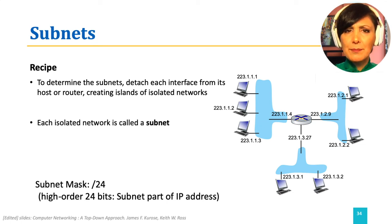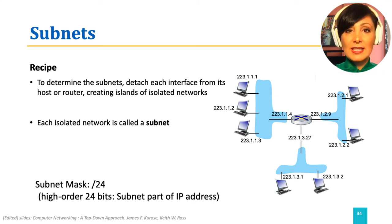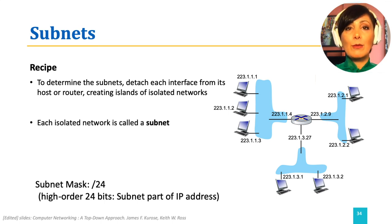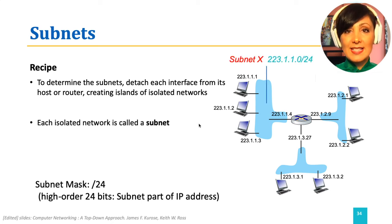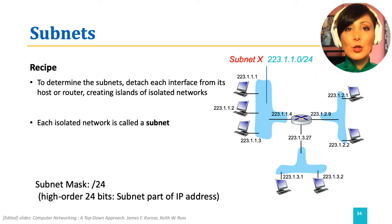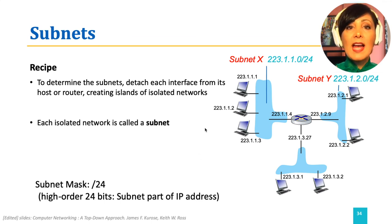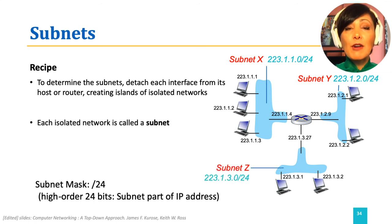The number of high-order bits of the address used for subnet addressing is called the subnet mask. But how many of them? The addressing scheme might be different. In this example, 24 bits are used for addressing the subnet. The rest of the address bits, which will be 8 bits, are used for host addressing within the network. So 223.1.1.0/24 is identifying subnet X, 223.1.2.0/24 is identifying subnet Y, and 223.1.3.0/24 is identifying subnet Z.